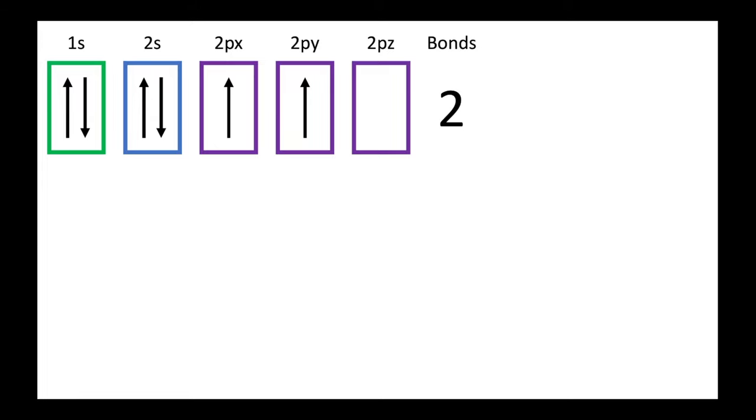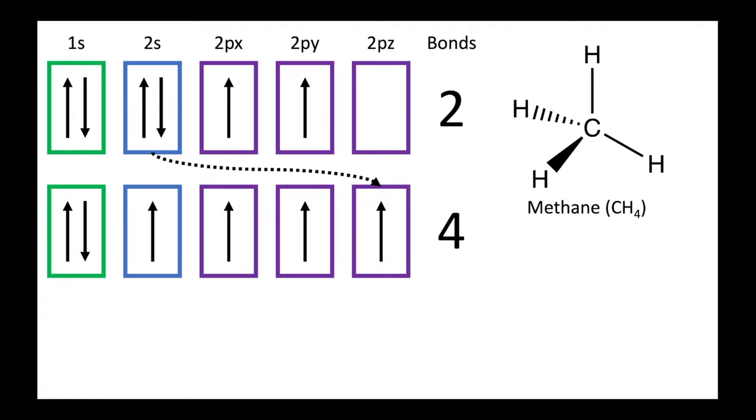For example, in methane shown here, one carbon atom has formed four bonds with hydrogen atoms. How is this possible? One of the electrons from the 2s orbital is promoted to the 2pz orbital, generating four unpaired electrons, one in the 2s and one in each of the three 2p orbitals. This, in theory, allows carbon to form the four covalent bonds found in methane.